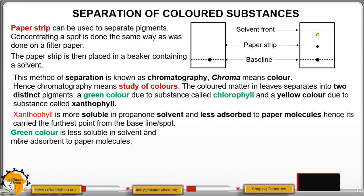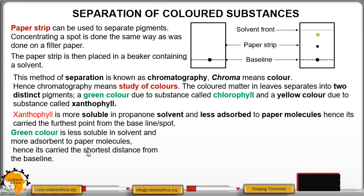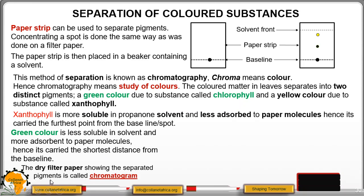Therefore, green color chlorophyll is less soluble in the solvent and more adsorbent to the paper molecules. So in this case, it moves the shortest distance from the baseline. The dry filter paper showing the spread-separated colors or pigments is called a chromatogram.